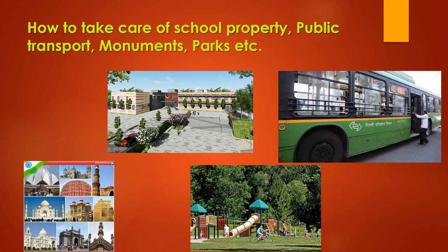Second, public transport. Buses, trains, and planes are public properties. Some people try to damage the seats of buses or tear the seat covers of trains, which we should not do. We should not scribble names on painted areas and should always sit on allotted seats. If someone is doing something wrong, we should inform the concerned authorities. We should not spit in buses and trains, and bus stops and platforms should be kept clean — this is our duty.